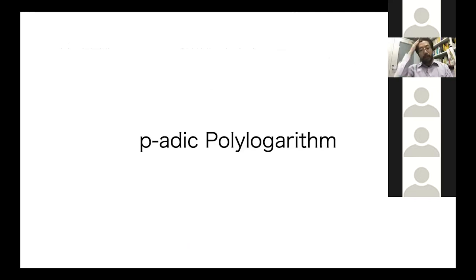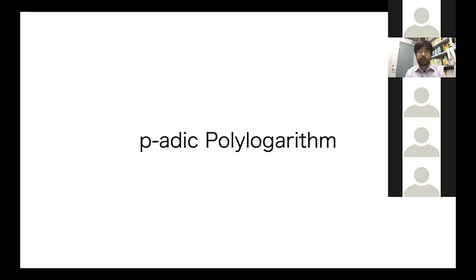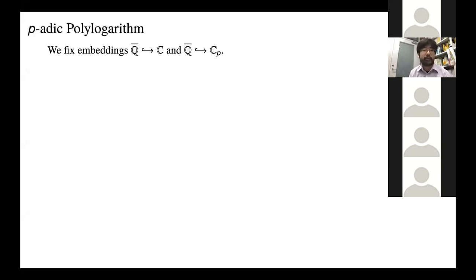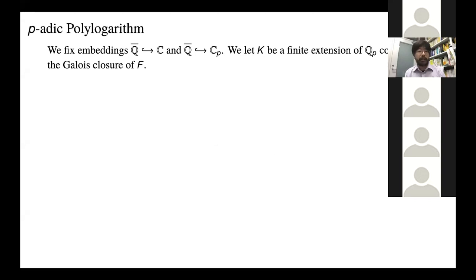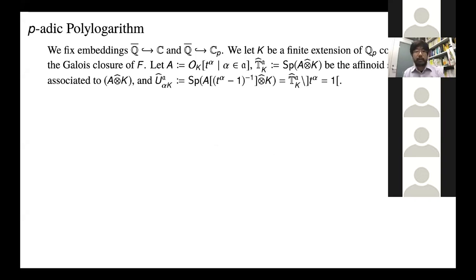Now I want to talk about periodic polylogarithms. This research started from trying to figure out the polylogarithms in this case. Our observation allows us to define the periodic polylogarithms very clearly. We fix an embedding of Q-bar into C and into C_p, and let k be a finite extension of Q_p containing the Galois closure. What we're doing is thinking about the rigid analytic spaces associated to what we've discussed. So A_k is the k-version of the ring of T_A, and we take the affinoid space attached to this, removing the divisors t^alpha - 1.